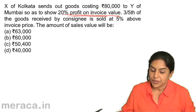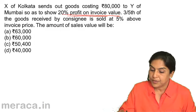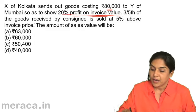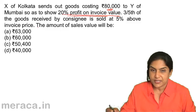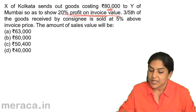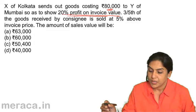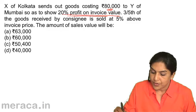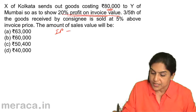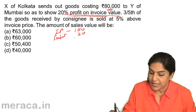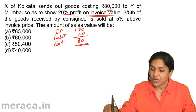Let us see how we go about this. The cost of the goods is 80,000. But the invoice price — the price at which it is being sent — is so as to show 20% profit on invoice value. Suppose invoice price is 100. Profit is 20% of invoice, so it is 20. Therefore, the cost is actually 80. This is the relation: invoice price, profit, and cost.